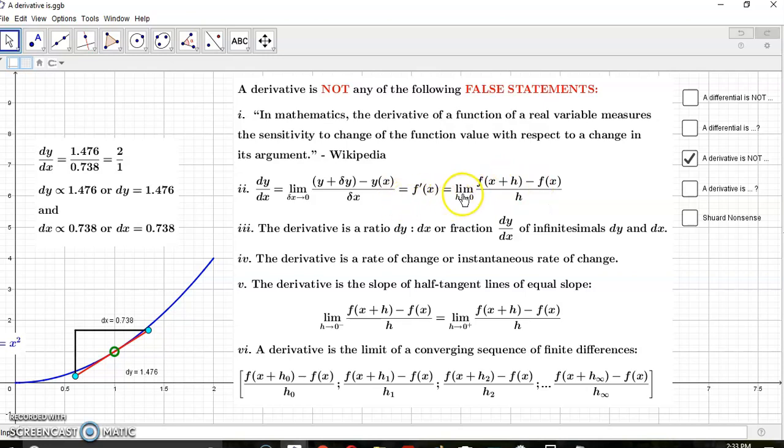Number three: the derivative is a ratio dy to dx or a fraction dy to dx of infinitesimals dy and dx. Again, that's absolute garbage because dy and dx are not infinitesimals because infinitesimals don't exist.